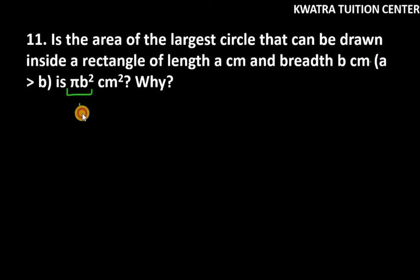We have given the area of the circle and the condition to solve. First of all, we understand that the diameter of the circle will be equal to the breadth of the rectangle, which is given to us as b.